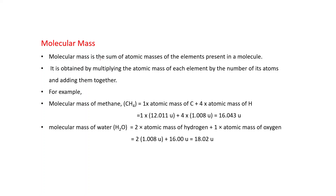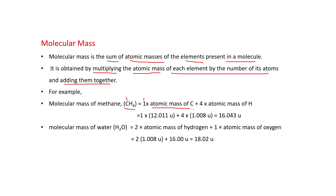Molecular mass is the sum of atomic masses of the elements present in a molecule. It is obtained by multiplying the atomic mass of each element by the number of its atoms and adding them together. For example, the molecular mass of methane (CH₄) is: 1 carbon atom × 12.011 U, plus 4 hydrogen atoms × 1.008 U, which gives 16.043 U. This is the molecular mass of methane.